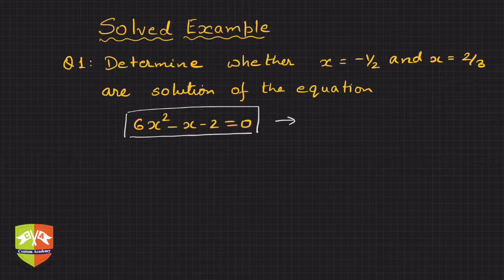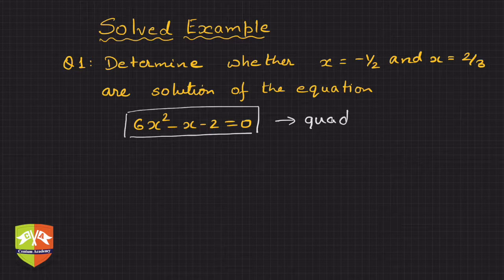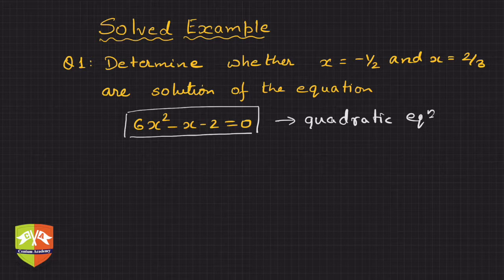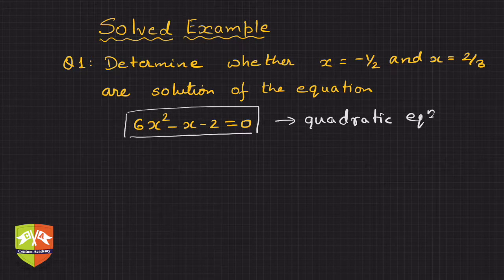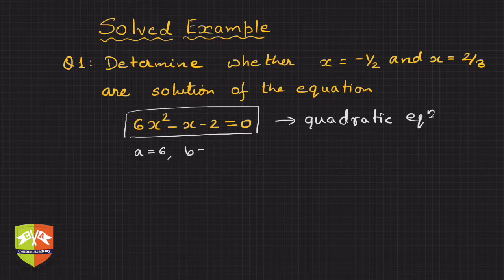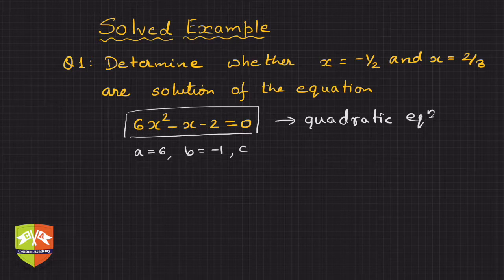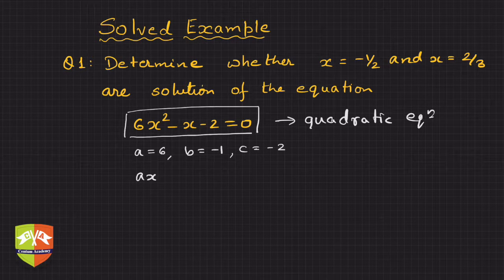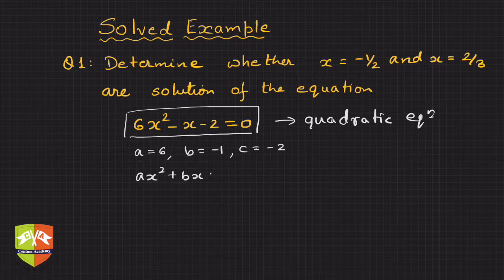If you see, this is a quadratic equation. Here, a = 6, b = -1, and c = -2. The general form of a quadratic equation is ax² + bx + c = 0. This is just a recap, not required for solving this question.